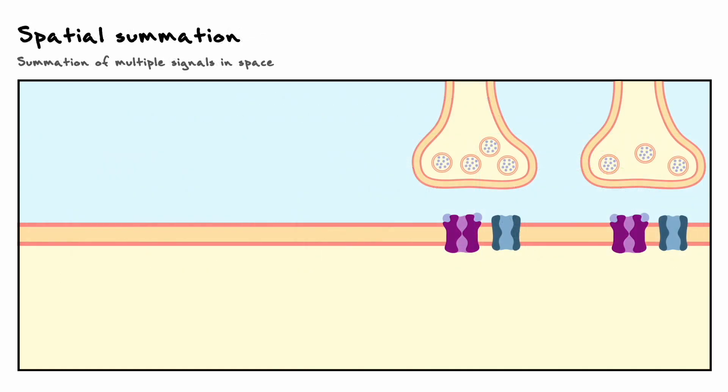Alright, now let's move on to spatial summation, which occurs when two or more synaptic potentials are added in space. In temporal summation, we focused a lot on the time constant, and as you can imagine, here we will focus a lot on the space constant.